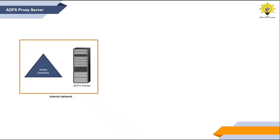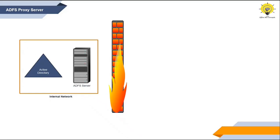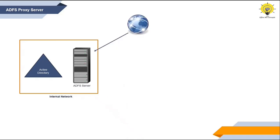When we install ADFS server, we do not expose it to the internet. That means this ADFS server always sits behind the firewall. The reason is, if we expose our ADFS server to the internet, then anyone from the external network can access this ADFS server and can get access to the internal network. And this is going to be a big threat to the organization's security. So this is why we always install ADFS server within the internal network.